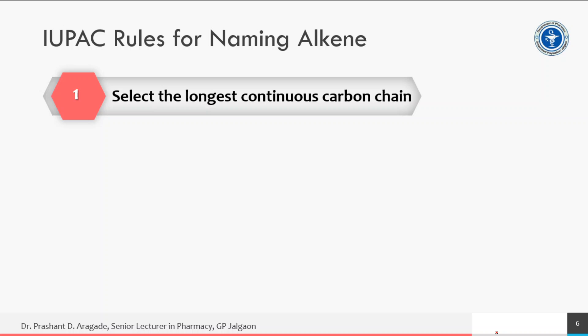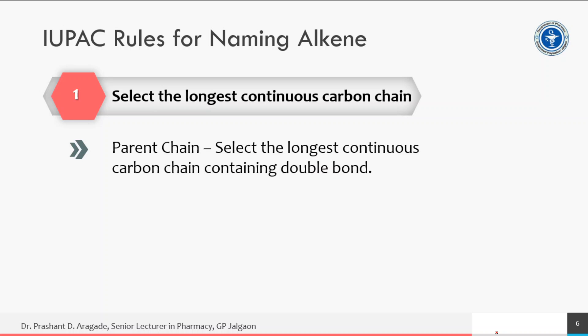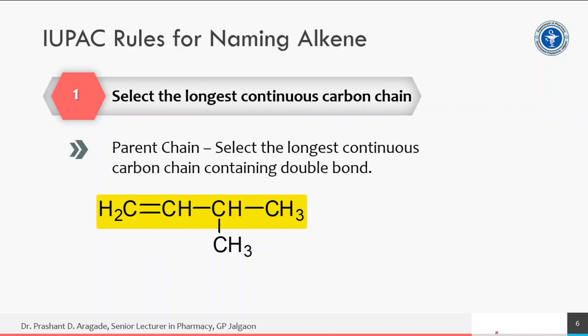Rule number one: select the longest continuous carbon chain. Always select the longest continuous carbon chain containing the double bond — that chain is called the parent chain. For example, select the longest continuous chain containing the carbon-carbon double bond.